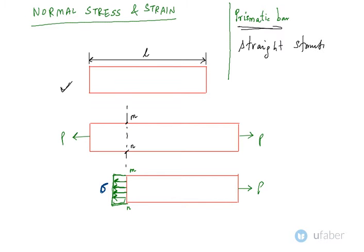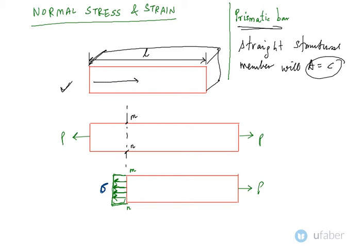With cross-section area as a constant value throughout its length, the cross-section is the same. The cross-section is A. The length of this prismatic bar is L.